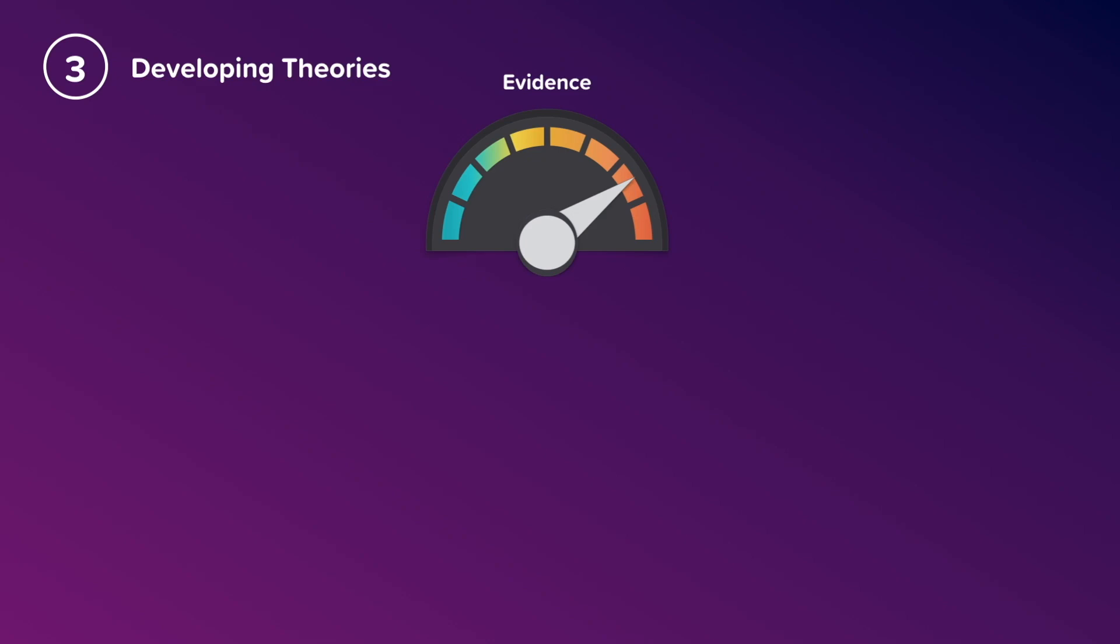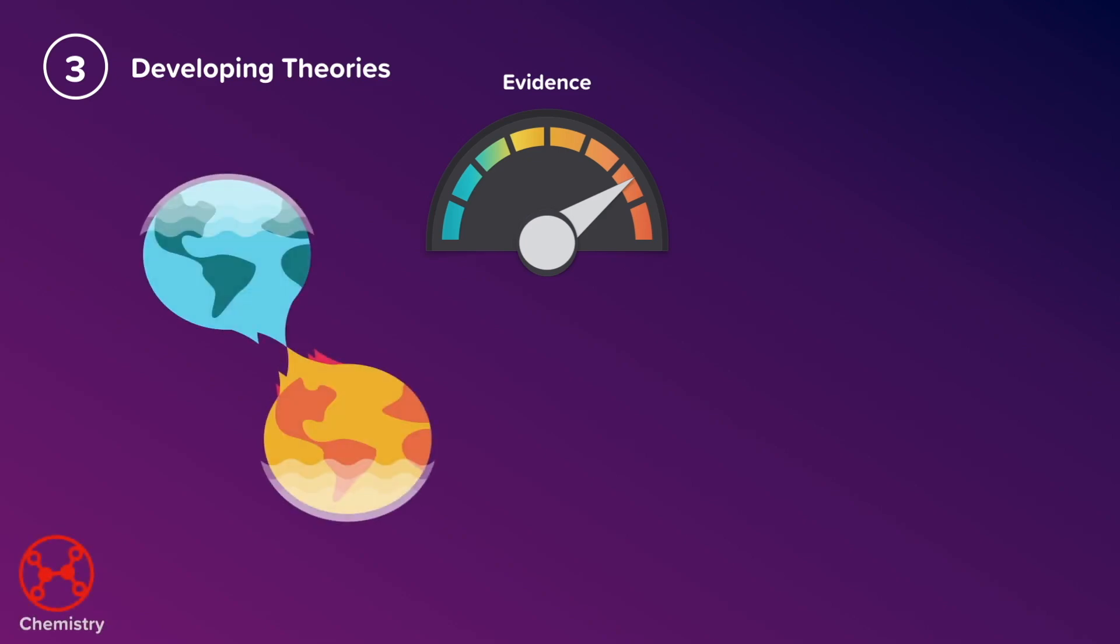For example, we have lots of evidence to show us that climate change is occurring on our planet. We also have lots of different theories and evidence for evolution.